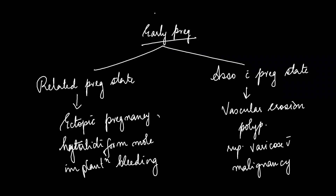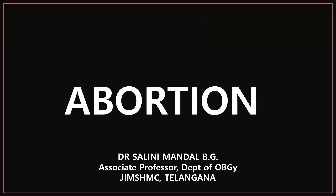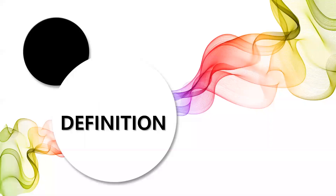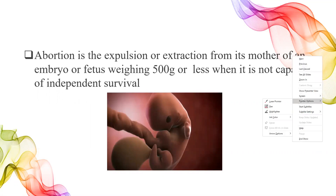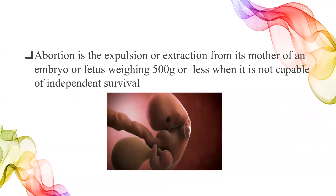So these are the causes of bleeding in early pregnancy. This was a little introduction regarding the chapter. Now let's discuss the topic proper, that is abortion. Abortion is basically an expulsion or extraction of the fetus from the mother. What you need to remember is that the weight of that particular conceptus should be 500 grams or less.